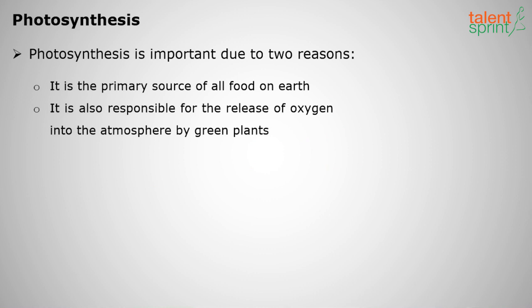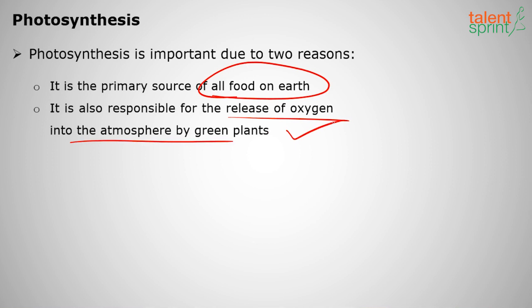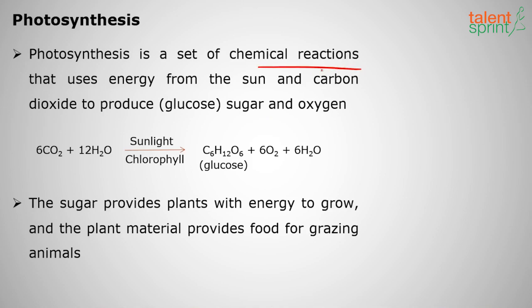Photosynthesis is important for two reasons. First is food — plants need food, and the consumers also need food. Animals which feed on plants also need food; when plants prepare their own food, only then will animals get their food. Second, photosynthesis is responsible for the release of oxygen into the atmosphere. Animals need oxygen, and this oxygen is given by plants during photosynthesis.